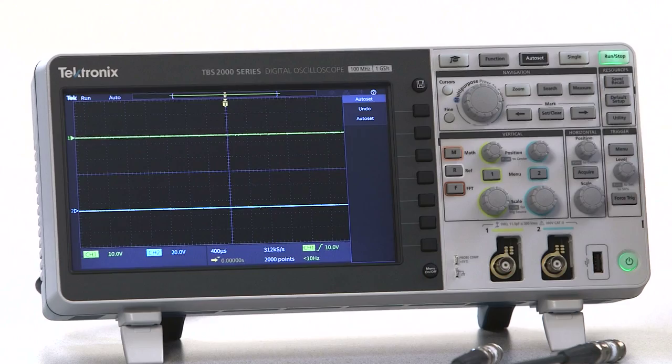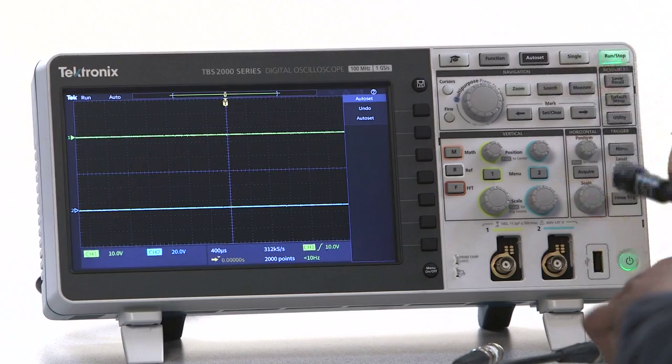The most common probes divide or attenuate the input signal by 10. These are called 10x probes. They can measure relatively high frequency signals and have good voltage range.